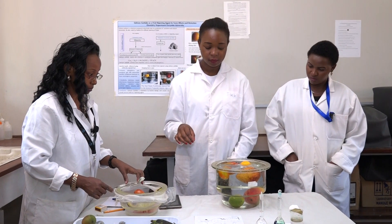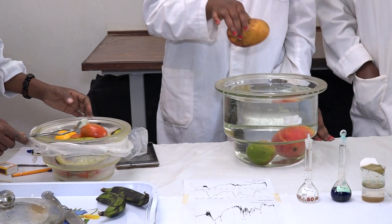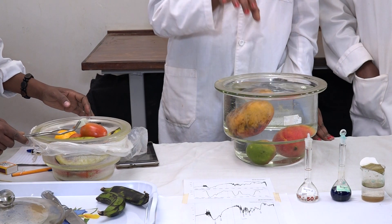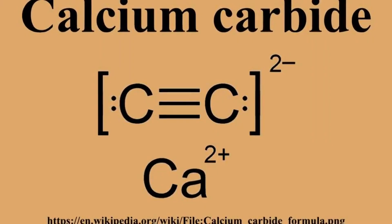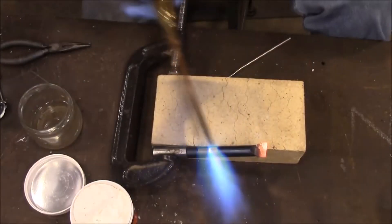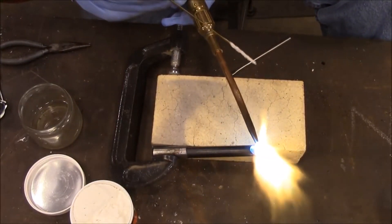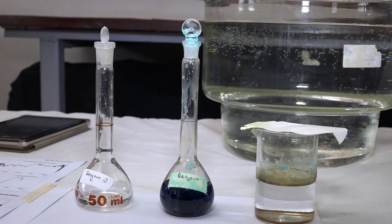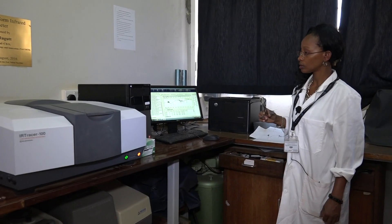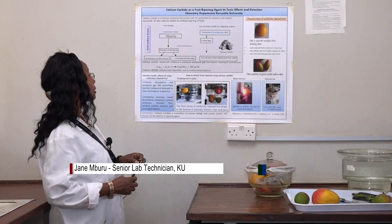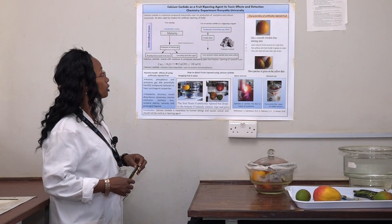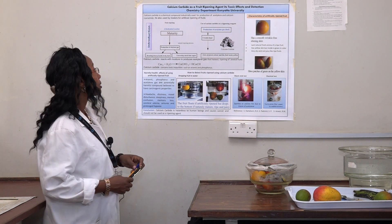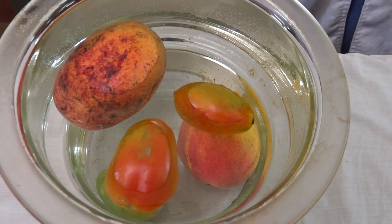Buru directs us on how to do the floating method. Calcium carbide is a chemical compound of calcium and carbon, which in pure form is a white crystalline substance commonly used in welding. Its other industrial uses include the production of acetylene and calcium cyanamide.